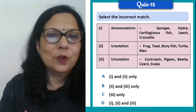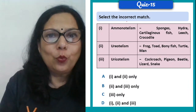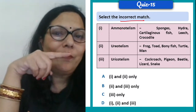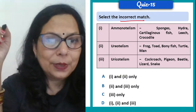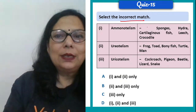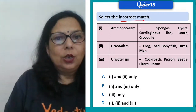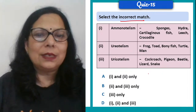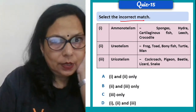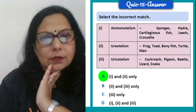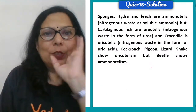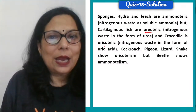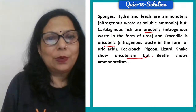Select the incorrect match regarding ammonotelic, ureotelic, and uricotelic organisms. Ureotelic — mammals, humans. Ammonotelic — most primitive, aquatic — sponges, hydra. Uricotelic — birds, snakes, lizards, cockroach, pigeon, crocodile. But beetle shows ammonotelism — that is the incorrect match to note. Please learn this — it is very important.